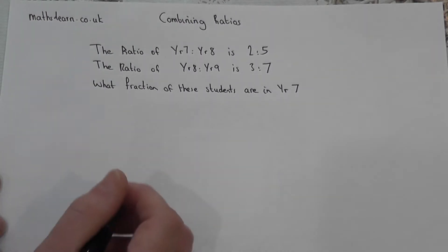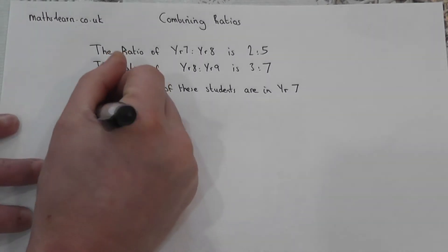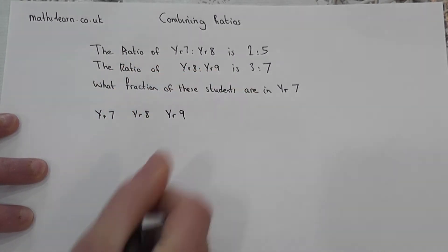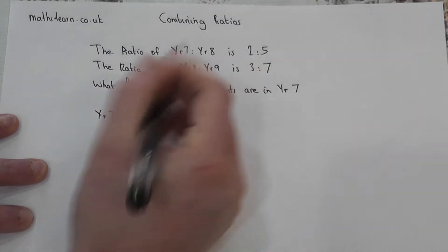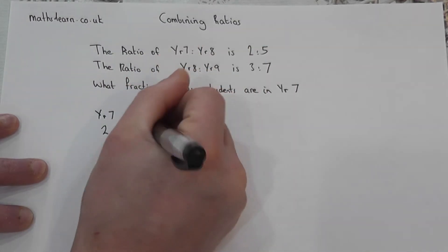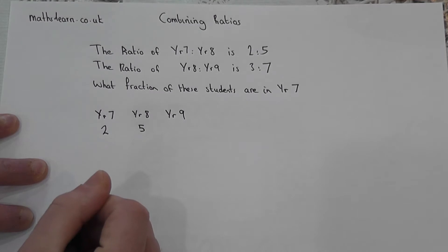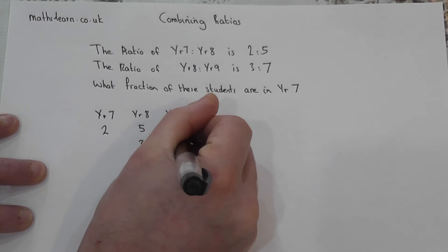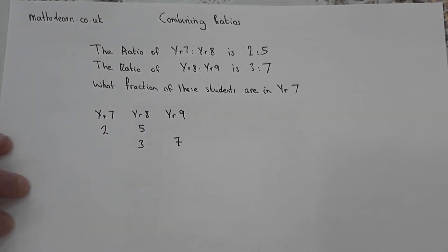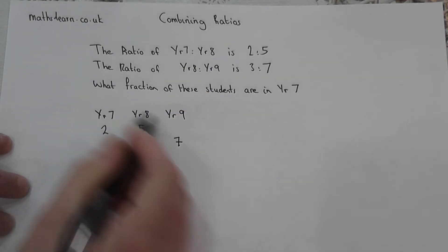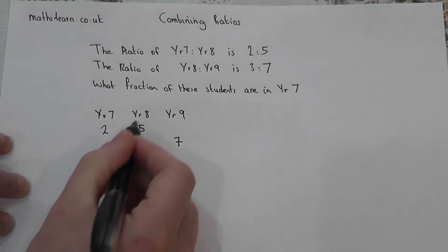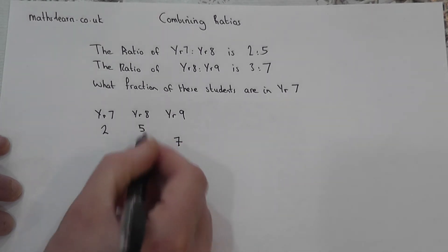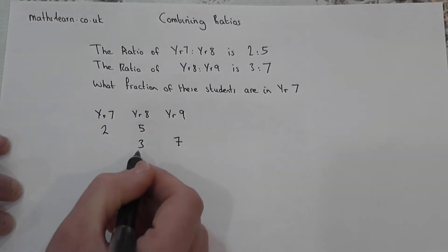Here's a way to look at it. Imagine a table with Year 7, Year 8, and Year 9. For every two Year 7 there are five in Year 8, and for every three in Year 8 there are seven in Year 9. To compare these in total we need the overlap to be the same, so we need to scale both ratios so that the numbers in Year 8 are the same.